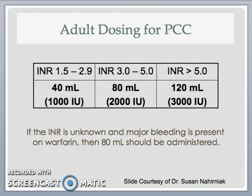This slide summarizes the adult dosing regimen for PCC. If the INR is between 1.5 to 2.9, then request 40 cc or 1,000 international units to reverse warfarin. If the INR is between 3 to 5, then the appropriate dose is 80 cc or 2,000 international units. And finally, if the INR is greater than 5, then issue 120 cc or 3,000 international units. If the INR is unknown and major bleeding is present on warfarin, then 80 cc should be administered. You may find the PCC request form on the Alberta Health Services website under the Edmonton Zone section.